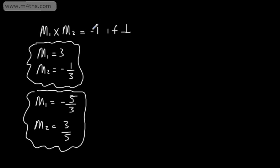So parallel lines will have equal gradients. Perpendicular lines: the product of the two gradients is negative 1, or you can invert the fraction and change the sign. Let's go ahead and do some questions involving parallel and perpendicular lines.